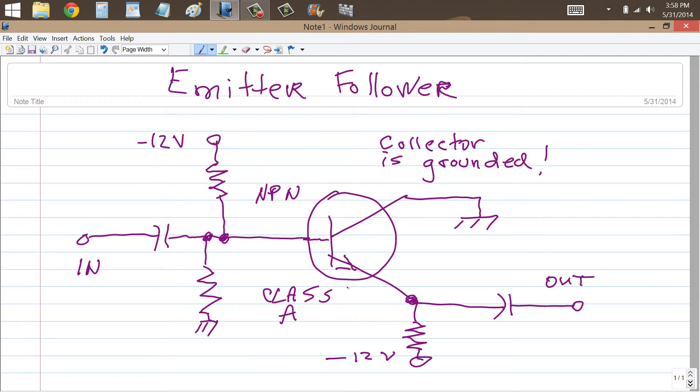Class A means that current flows through the device for the entire input cycle. The circuit that we see here is mainly intended for radio frequency applications or RF. For example, 3 MHz, 4 MHz, whatever that may be, ham radio applications in particular, this can be useful for.